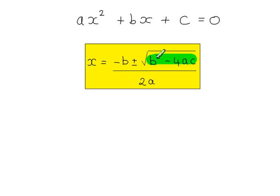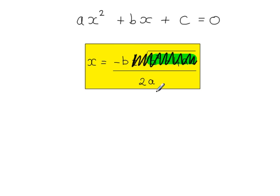Another option is if b squared minus 4ac is equal to zero. So then you're doing the square root of zero, that's zero, so in the formula all you have is minus b over 2a, because this part becomes zero. In that case, x is equal to this value here. So you have a single root, which is sometimes called a repeated root.